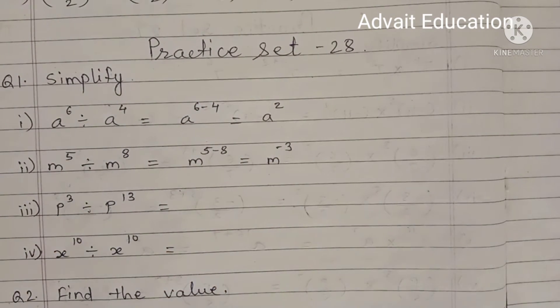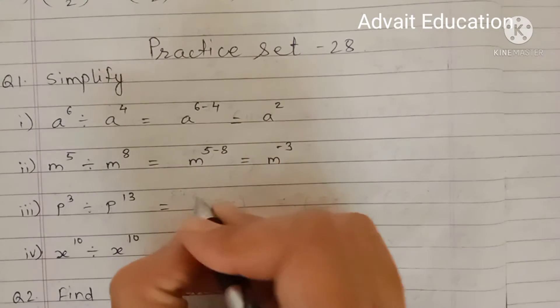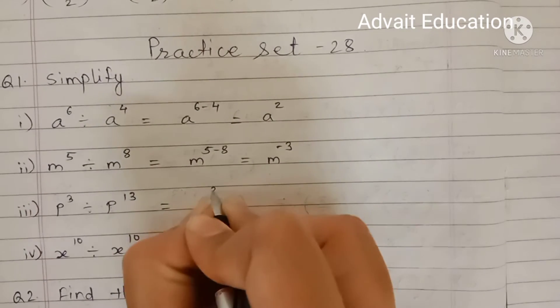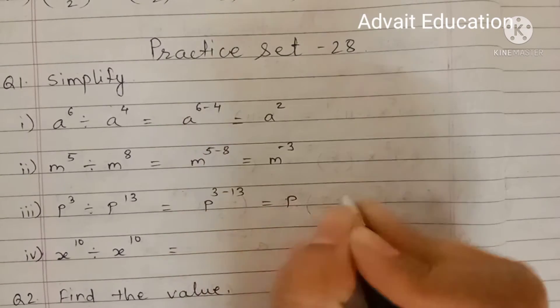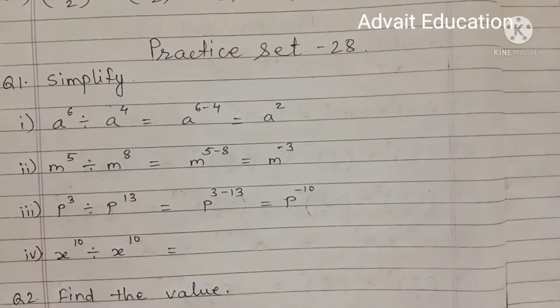Next, P raised to 3 divided by P raised to 13. P raised to 3 minus 13. Means P raised to minus 10.